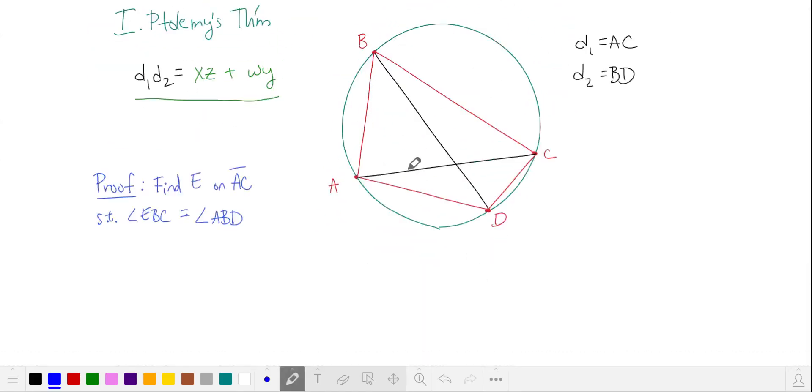Let's prove this. We'll find a point E on diagonal AC, such that angle EBC is the same as angle ABD. Since arc AB is demarcated by both angles C and D, these two angles are also congruent.